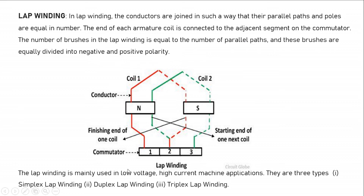The number of brushes in lap winding is equal to the number of parallel paths, and these brushes are equally divided into negative and positive polarity. Lap winding is mainly used for low voltage, high current machines. There are three types: simplex, duplex, and triplex lap windings.